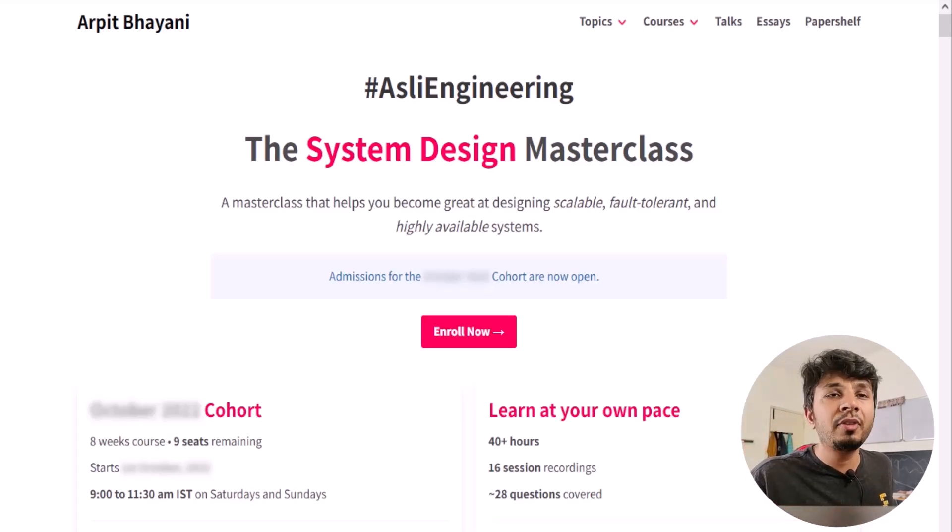We cover topics ranging from real-time text communication for Slack to designing our own toy load balancer to Cricbuzz's live text commentary to doing impressions counting at scale. In all, we would be covering roughly 28 systems and the detailed curriculum split week by week can be found in the course page linked in the description below.